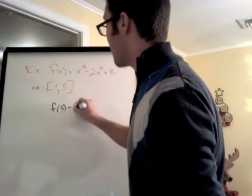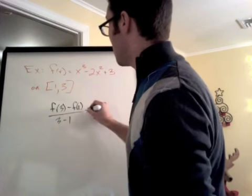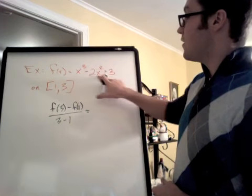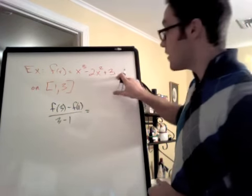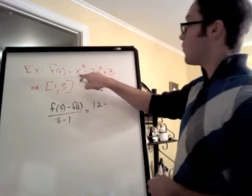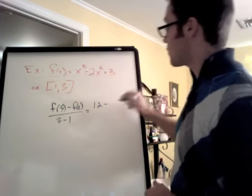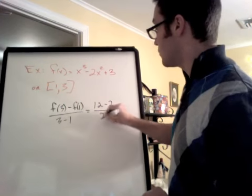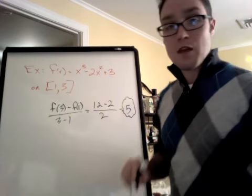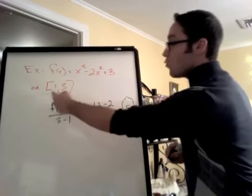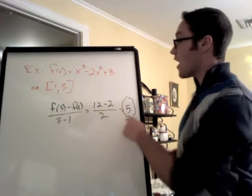So what I'm going to do is find the average rate of change. So I'm going to do [f(3) - f(1)] / (3 - 1). So I plug in 3, I get 27 - 18 = 9, plus 3 = 12. Now plug in 1 and you get 1 - 2 = -1, plus 3 = 2. So you get (12 - 2) / 2 = 5. So the mean value theorem says there's some point between 1 and 3 where the derivative, the instantaneous rate of change, equals 5. So let me do the derivative.